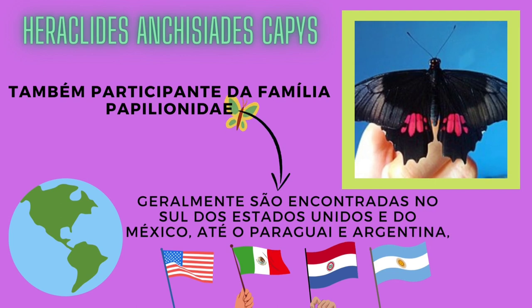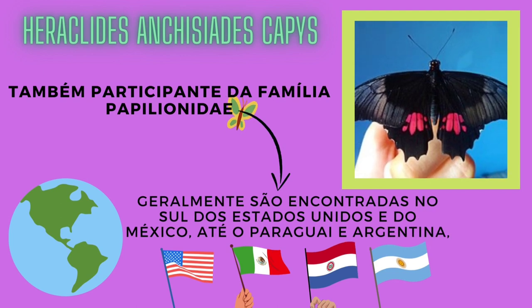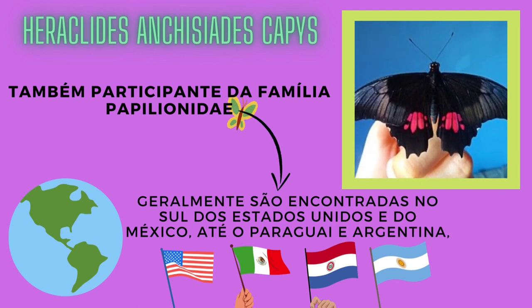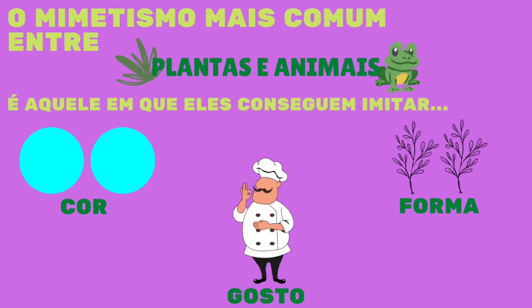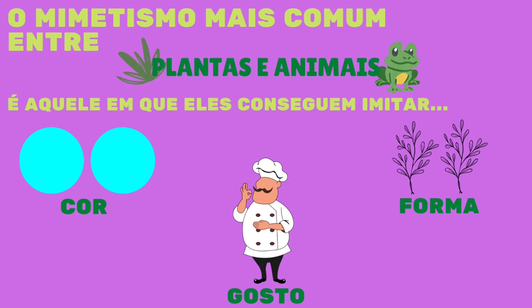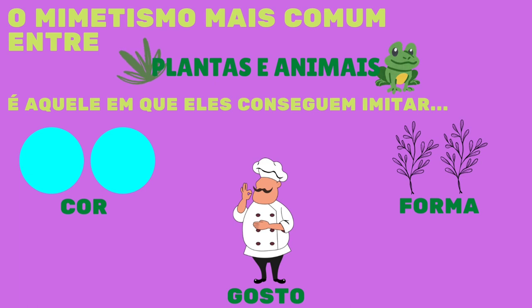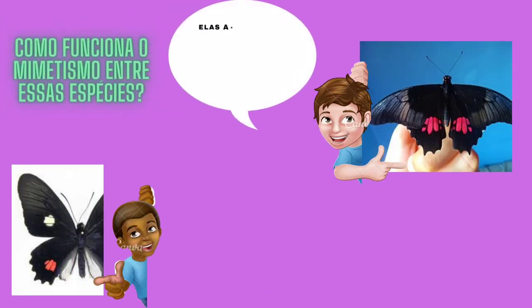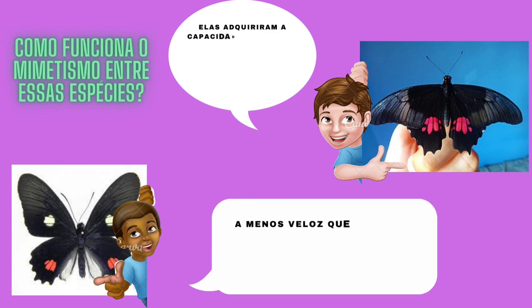Geralmente é encontrada no sul dos Estados Unidos e do México, até o Paraguai e a Argentina. O mimetismo mais comum entre plantas e animais é aquele onde o animal ou planta imita cores, formas ou gostos. Mas o mimetismo existente entre essas duas espécies é outro: um tipo de mimetismo baseado na velocidade do voo.